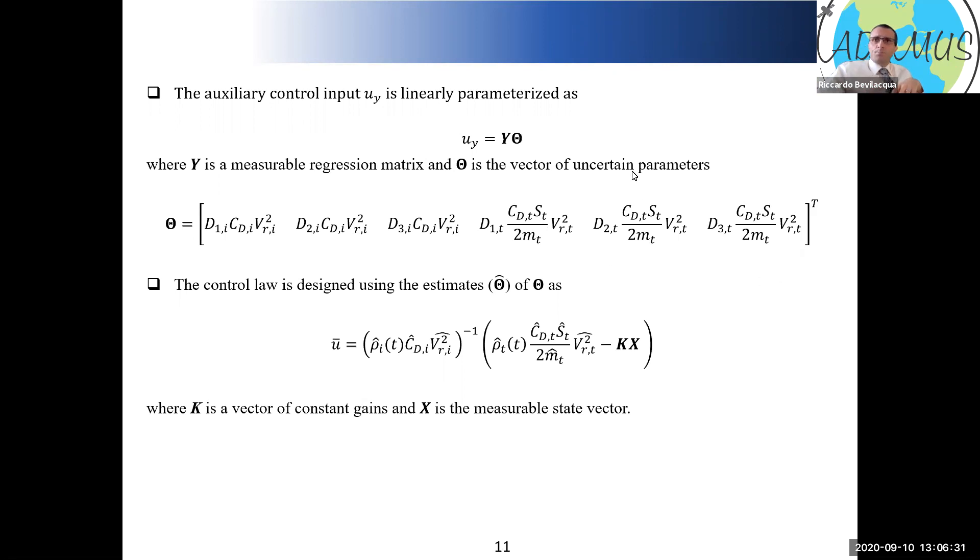I can write in a more compact form the same uy by separating the known quantities from the unknown ones, and Y is a measurable regression matrix. Theta would be my vector of uncertain parameters that I would like to estimate online. For the target, I assume that I know pretty much nothing about the drag behavior. I don't know the density, and you see it in the three parameters d1, 2, and 3. I don't know CD, mass surface, and velocity relative to the medium. I will not independently estimate these quantities, but knowing what these products are doing is basically telling me how to predict the orbital decay and the atmospheric behavior of the target. That's really what counts, what's important.